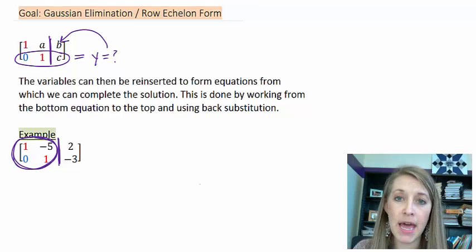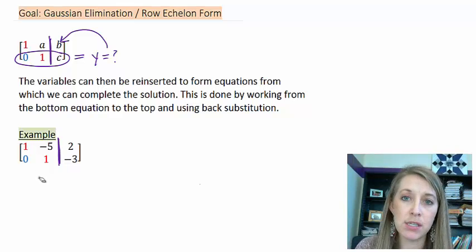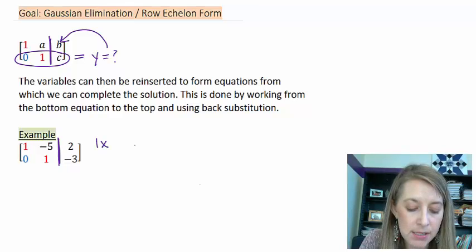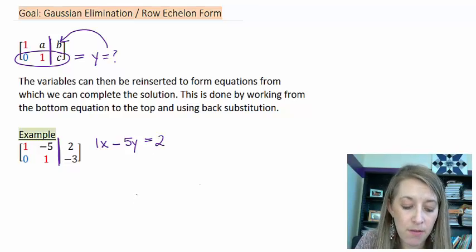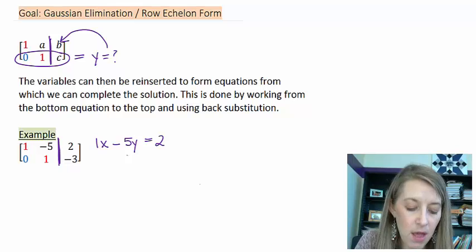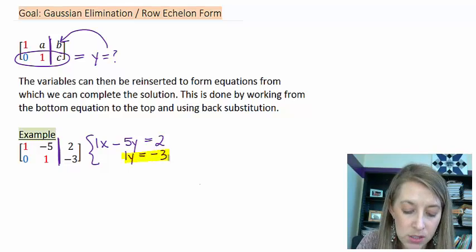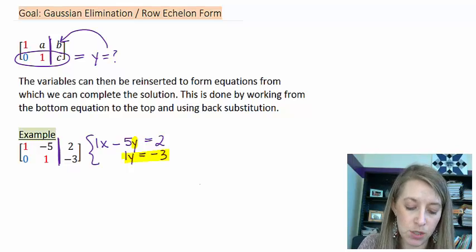Once I get it in this format, I can guarantee what my answers are. So if I put this back into system of equation format, my top equation would be a 1x plus a negative 5y is equal to 2. And my bottom equation is 0x, so I'm going to leave that off, plus a 1y is equal to negative 3. And so that now is my system of equations. I can take my y answer and I can substitute it into my first equation. I can back substitute it.